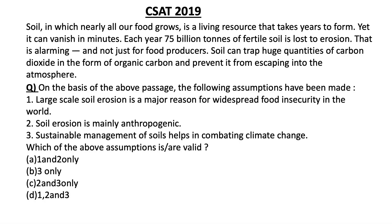On the basis of the above passage, the following assumptions have been made: (1) Large scale soil erosion is a major reason for widespread food insecurity in the world; (2) Soil erosion is mainly anthropogenic; (3) Sustainable management of soil helps in combating climate change. Statement 2 says soil erosion is mainly due to human activities. This is completely wrong because the biggest cause of soil erosion is rainfall and flooding. If you have studied the basics of soil erosion, you can easily rule out statement 2. Eliminating statement 2 rules out options A, C, and D — so option B, that is 3 only, is the correct answer.